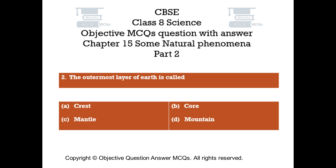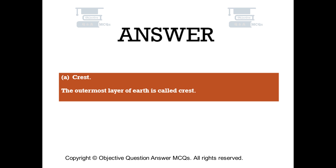Question number 2: The outermost layer of earth is called. Option A: Crest. Option B: Core. Option C: Mantle. Option D: Mountain. The right answer is Option A — Crest. The outermost layer of earth is called Crest.